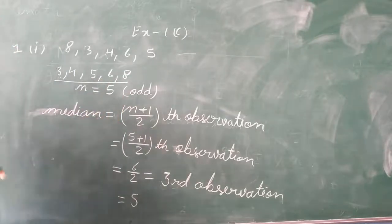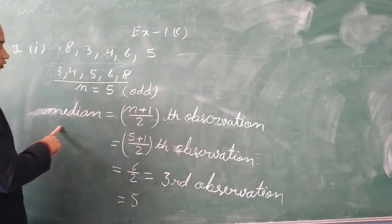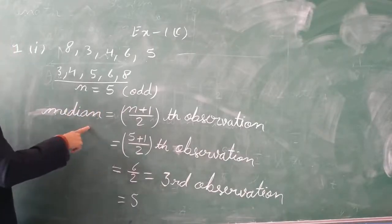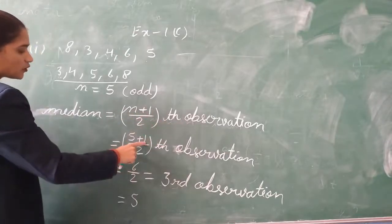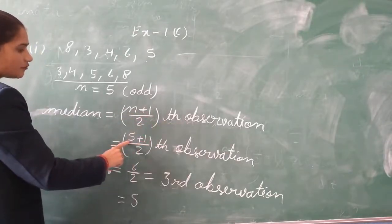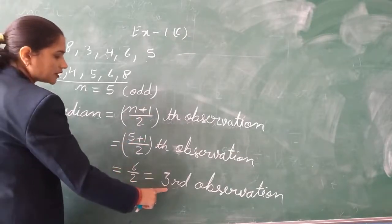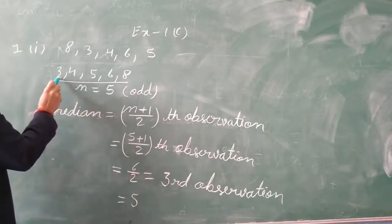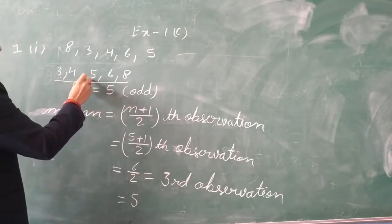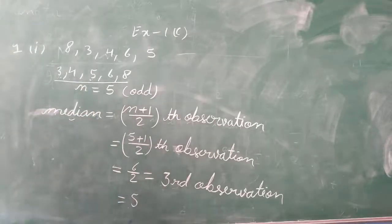5 means odd — those not divisible by 2. For odd, the formula to find the median is (n+1)/2 observation. n is 5, so 5 plus 1 is 6 divided by 2 equals 3. We observe the 3rd number: 1, 2, 3 — our 3rd number is 5. So 5 is the median for question 1, first part.